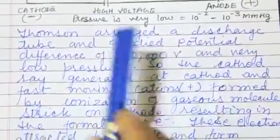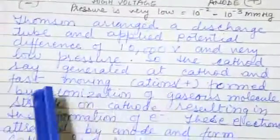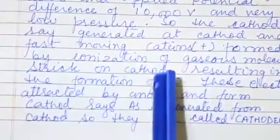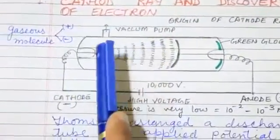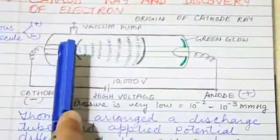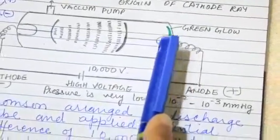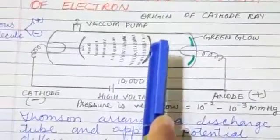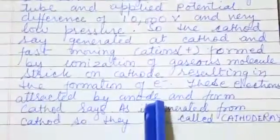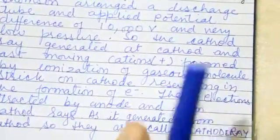In this chamber, gaseous molecule gets ionized. Thomson arranged the discharge tube and applied potential difference. The cathode ray generates at the cathode. Fast moving cations, the cation of the gaseous molecule formed by ionization strike on the cathode. The cation strike on the cathode resulting in the formation of electron. When cation is struck on the cathode, then electron formed and electron goes to anode. Anode is positive charge, so we assume electron as a negative charge. These electrons attracted by anode and form cathode ray. As it generated from cathode, so it is also known as cathode ray.